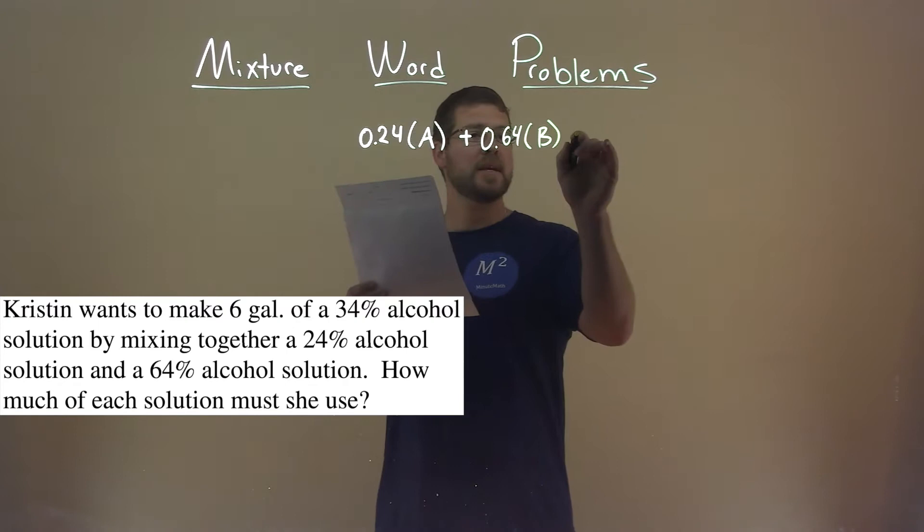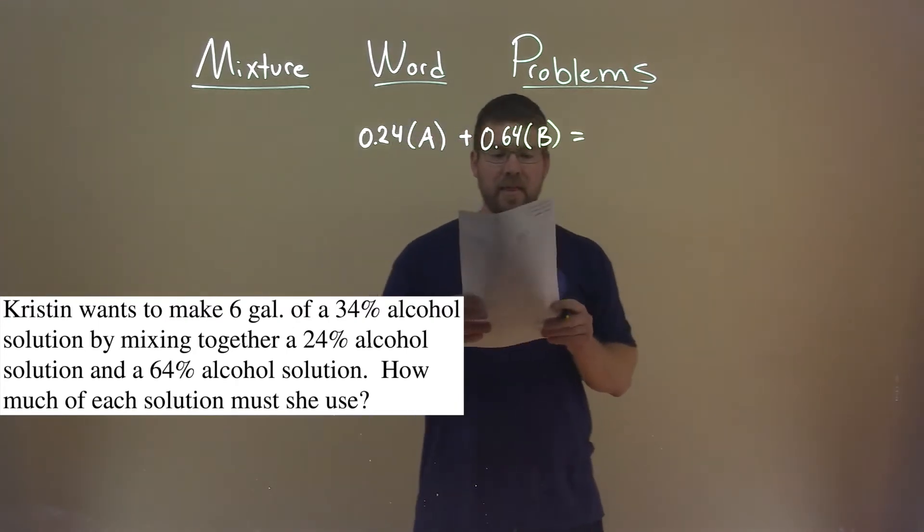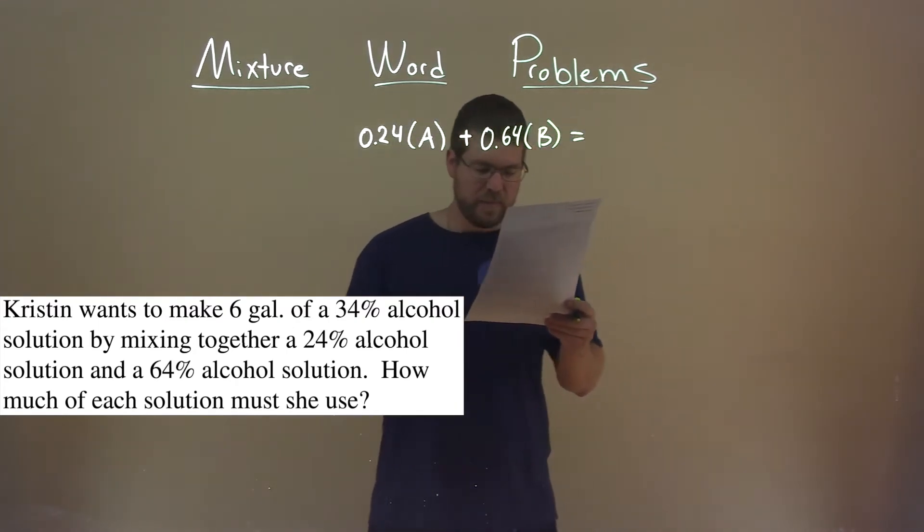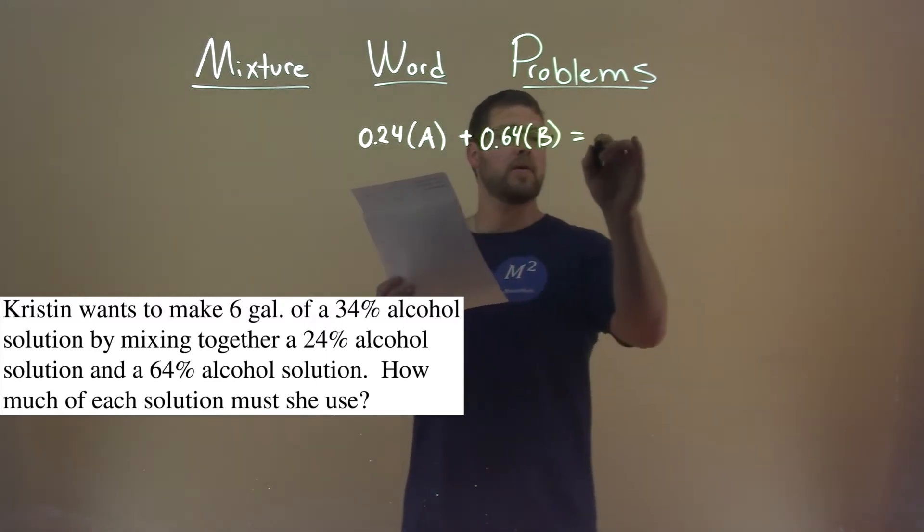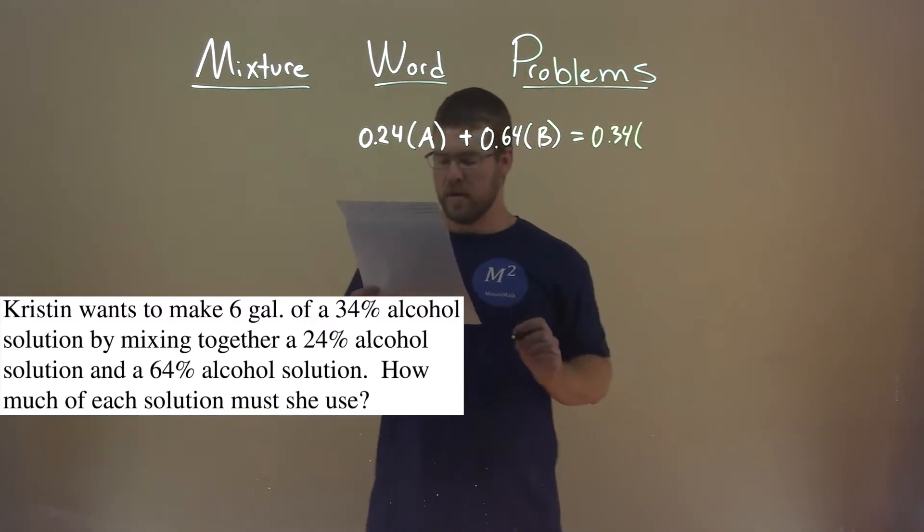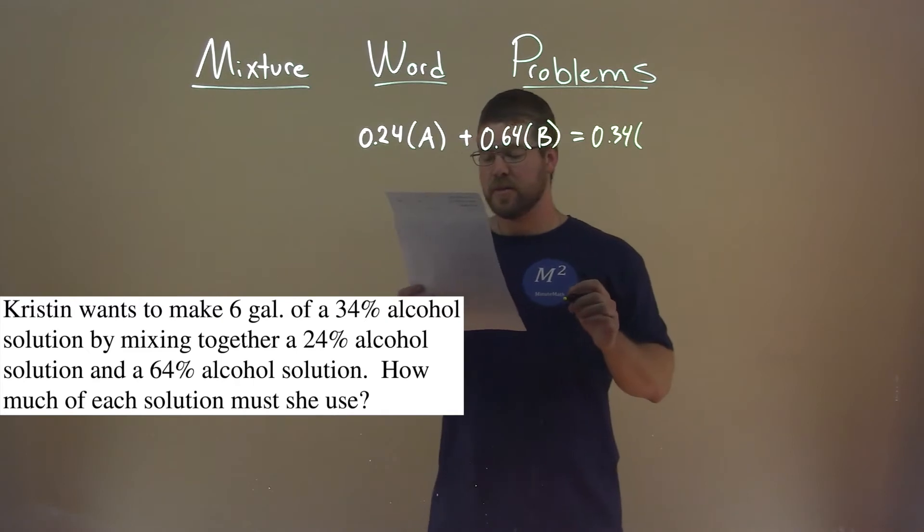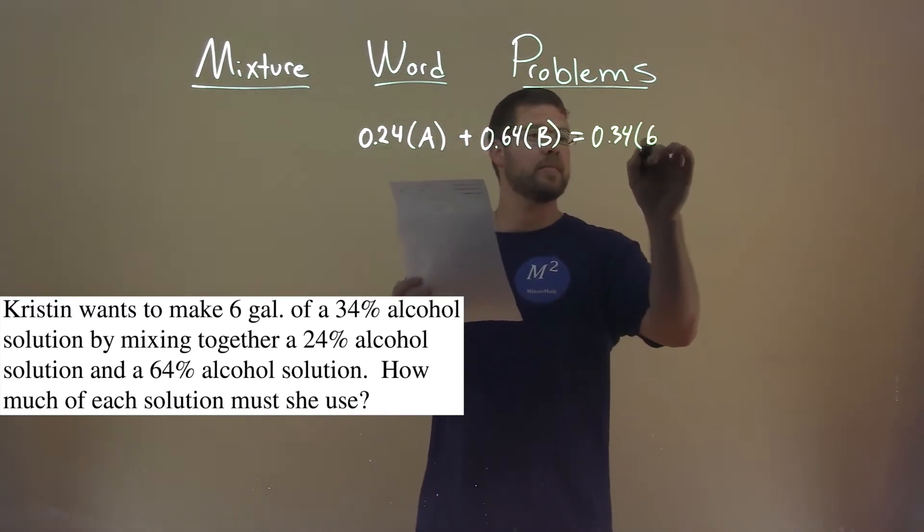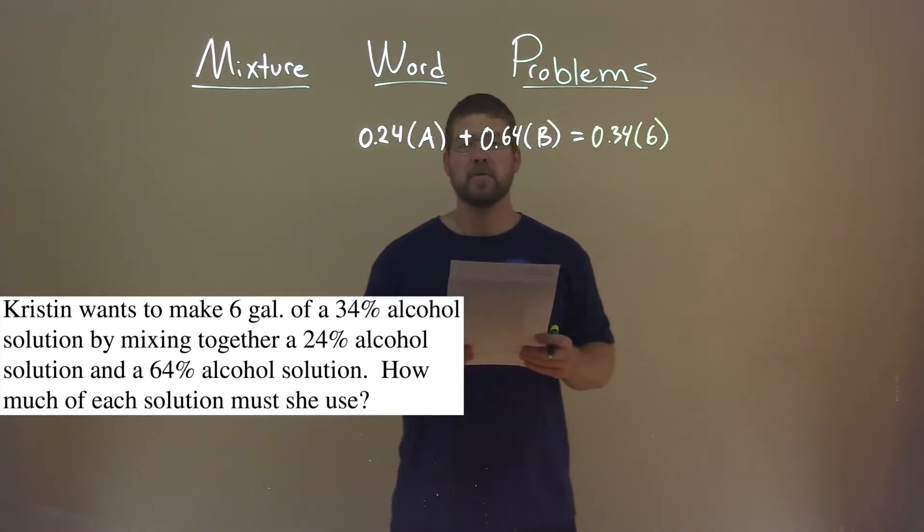Combined together, we're combining that together, we get a 34% alcohol solution, so 0.34. And they tell us here that she made 6 gallons, okay, of that solution.